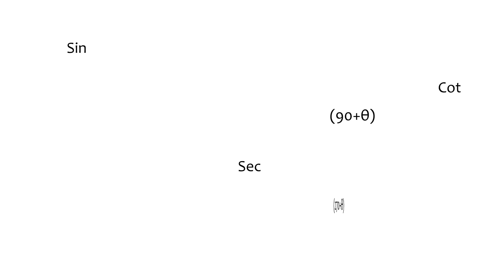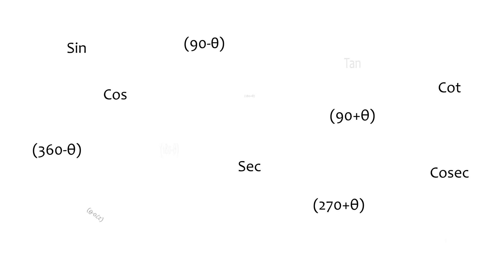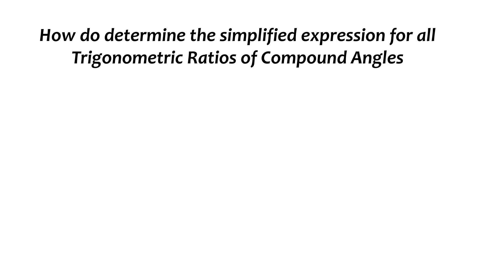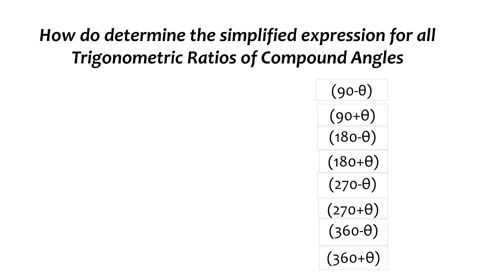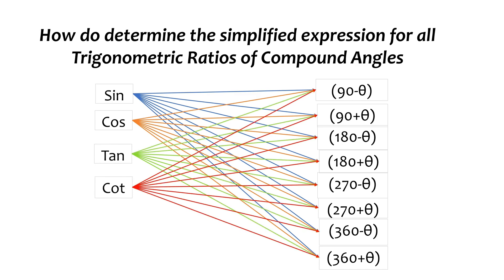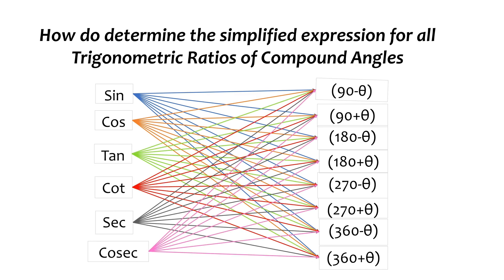Our confidence in trigonometry won't boost up until we know we can easily determine the value of any angle. In this video, we are going to learn how to very easily simplify and determine the value of trigonometric ratios of angles which involve either addition to or subtraction from 90°, 180°, 270°, and 360°, expressed as sine, cos, tan, cot, sec, and cosec of 90±θ, 180±θ, 270±θ, and 360±θ.